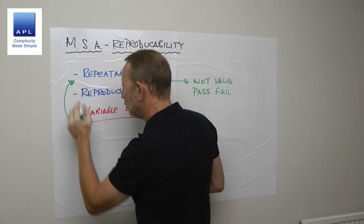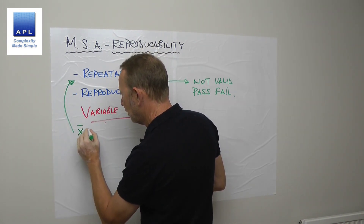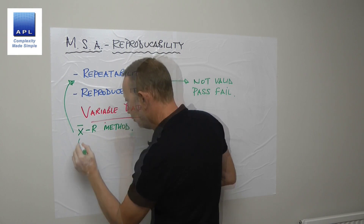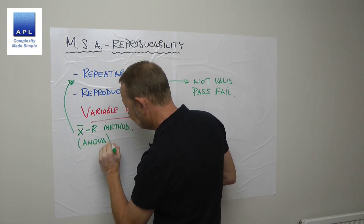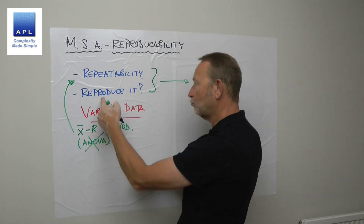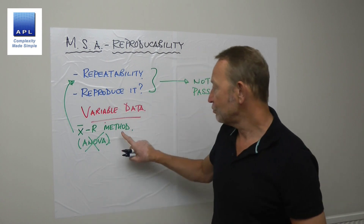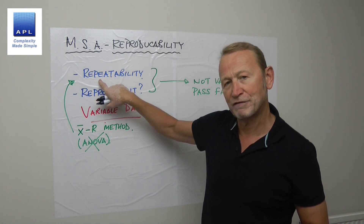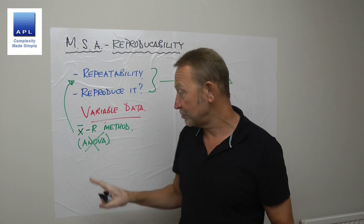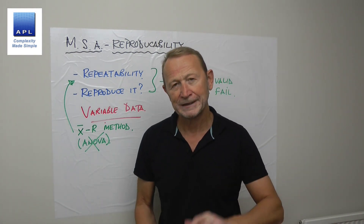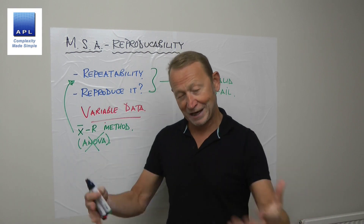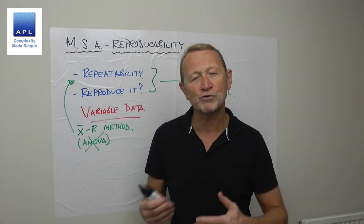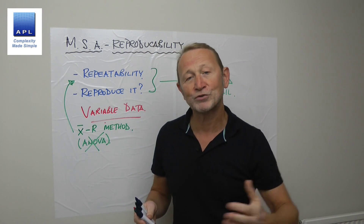The key point, if you use software, is that it will give you an option to use the X-bar R method. The usual method is ANOVA, but ANOVA cannot work if you're not reproducing the measurement. The X-bar R method will work out the repeatability component only. This is the only technique that works with one measurement system — you won't get a reproducibility component because you're not trying to reproduce the result.